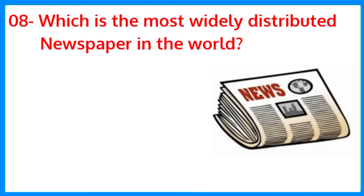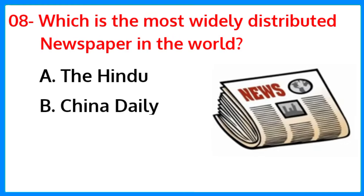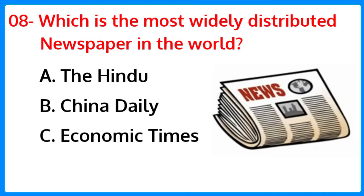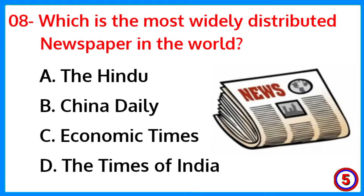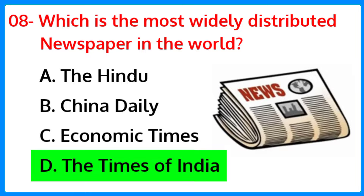Which is the most widely distributed newspaper in the world? The correct answer is option D — The Times of India.